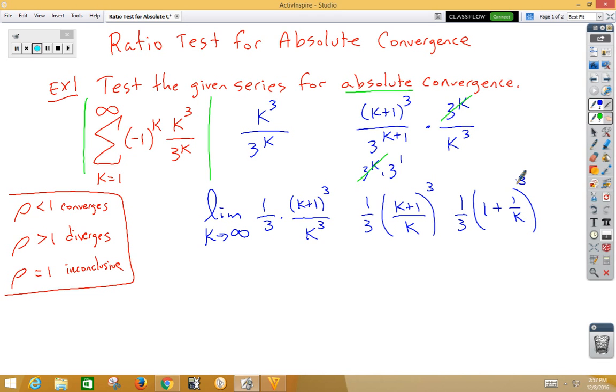Now, that's important because if I think of it that way, limit as k approaches infinity, we have 1 third 1 plus 1 over k cubed. When we go to infinity, the 1 over k, that's a low high, so that portion becomes 0. 1 plus 0 cubed times 1 third gives us an answer of 1 third.